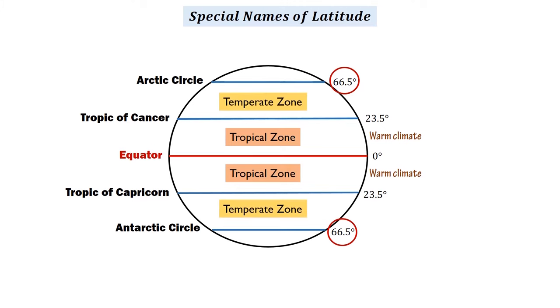The countries in these zones go through four seasons, such as winter, spring, summer, and autumn.